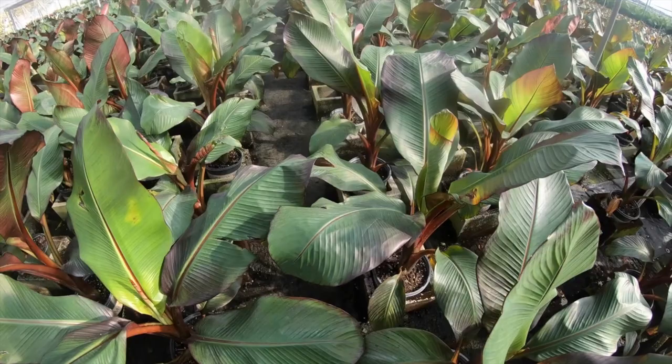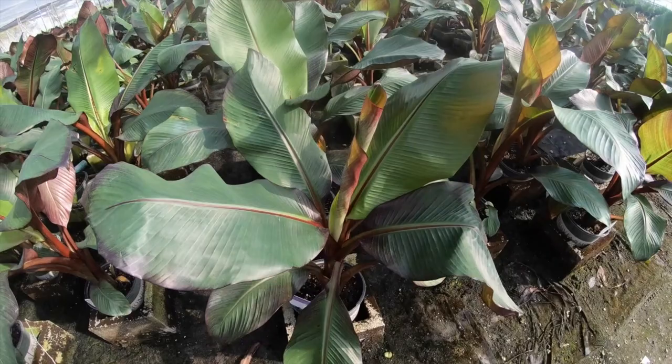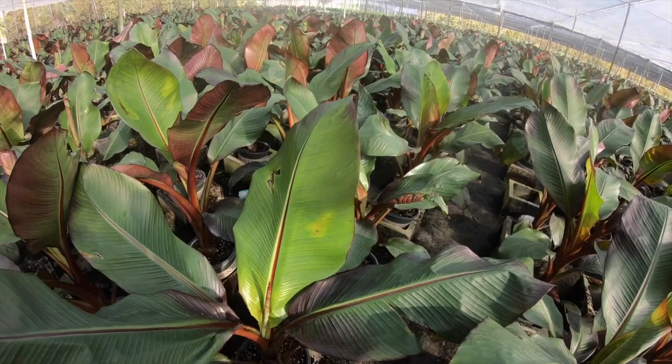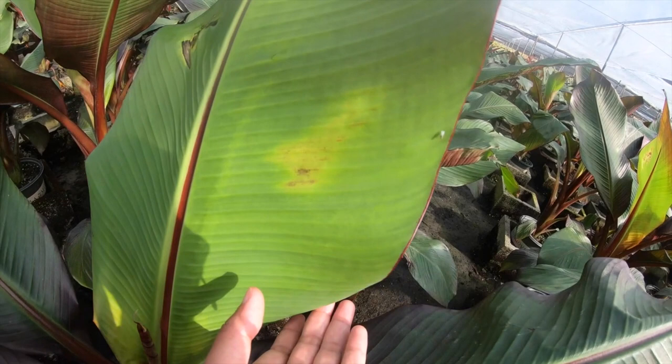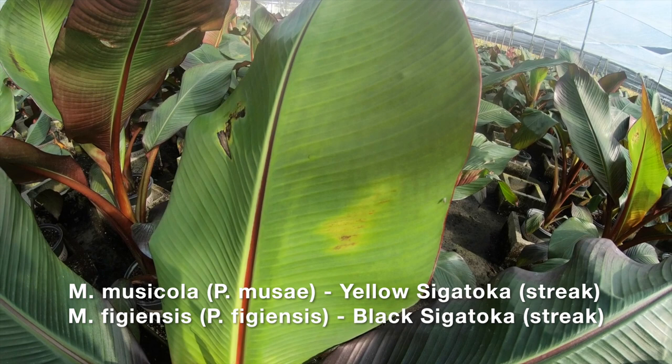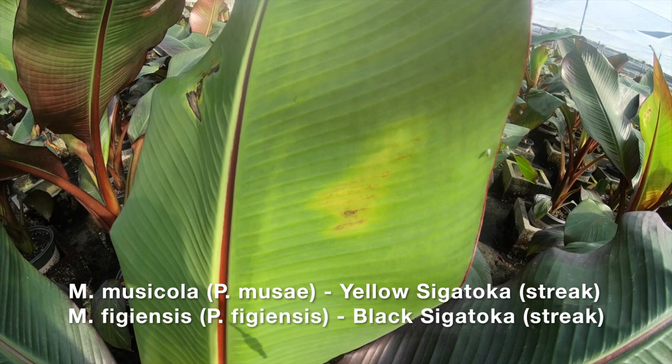These are ornamental bananas. You have seen edible banana fruit, but these are ornamental bananas, and they get the same disease as other food bananas. It's called black leaf streak or yellow leaf streak, caused by Mycosphaerella or Pseudocercospora — two different species. One causes the black leaf streak and another causes the yellow leaf streak, and they are really hard to differentiate between each other.